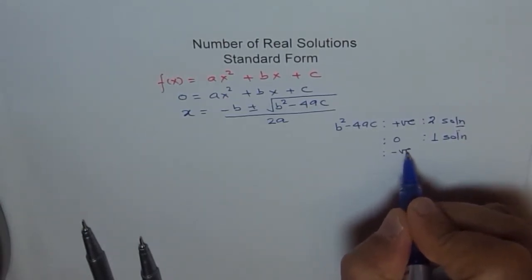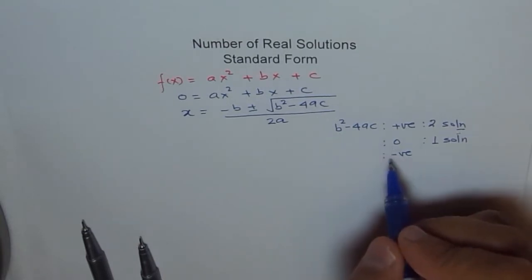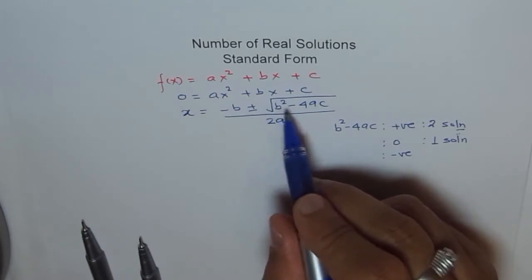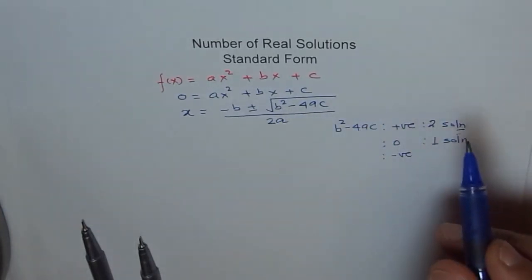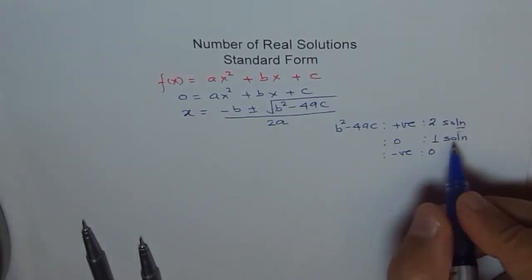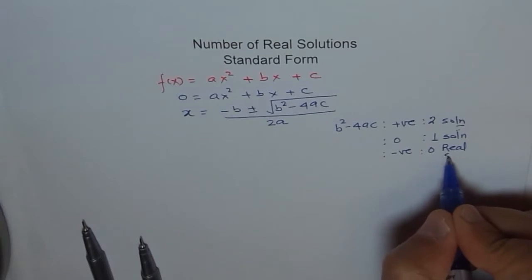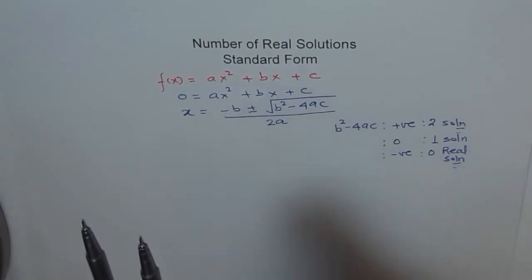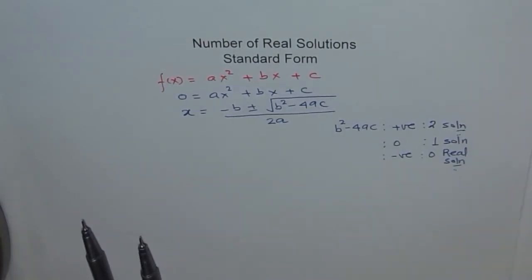But if b square minus 4ac, which is also called discriminant, is negative, then negative radical, square root of negative, we don't have in real numbers. It becomes imaginary number. So we say zero real solutions. Let me put the word real solutions here. Very important to show that the solutions are valid, but they are not in the domain of real numbers, so you cannot see them as x-intercepts.